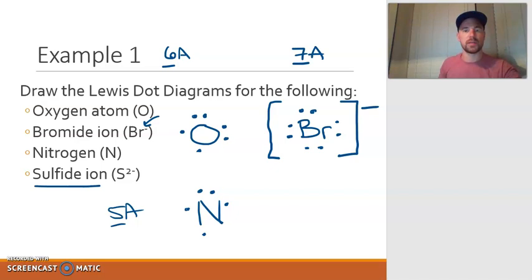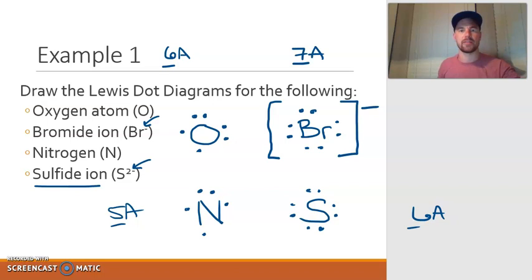Next is sulfide ion, which is sulfur to a negative 2. Sulfur is the symbol S, and sulfur is in group 6a, so it has 6 valence electrons. 1, 2, 3, 4, 5, and then 6. But it has a negative 2 charge when it is in ion form, so we have to add 2 extra electrons in. Once again, this is why sulfur has a negative 2 charge. It will complete the octet, making it just like a noble gas. We have to put the brackets around, and then the charge on the outside.